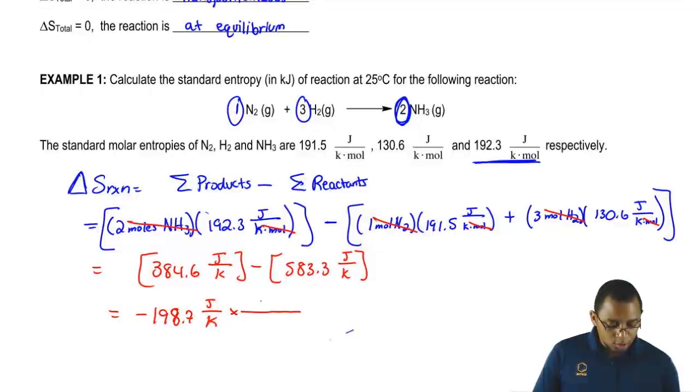We want kilojoules, one kilojoule. One kilo is 10 to the 3 joules, and remember, 10 to the 3 is the same thing as 1,000. Joules cancel out. Our units at the end will be kilojoules over Kelvin, so it's going to be negative 0.1987 kilojoules over Kelvin.